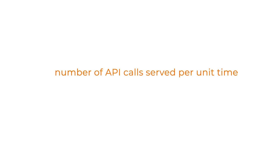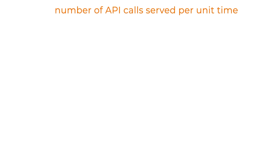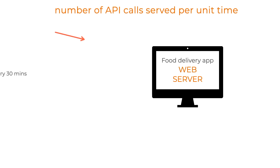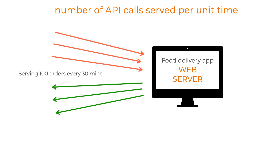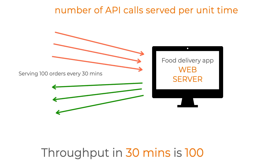In system design, throughput is relevant when understanding how many API calls are served in a particular amount of time. For example, a system handling order placement that can handle 100 orders within 30 minutes has a throughput of 100. A more sophisticated, well-scaled system that handles 1,000 orders within 30 minutes has a throughput of 1,000. That is the concept of throughput.